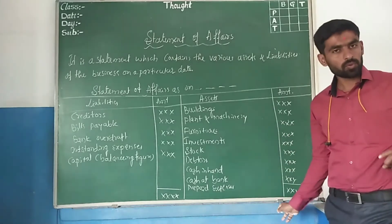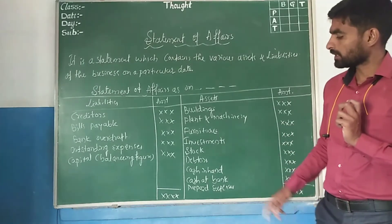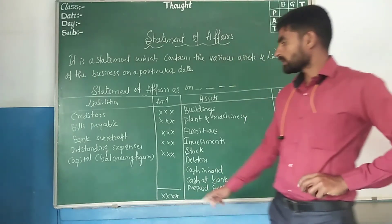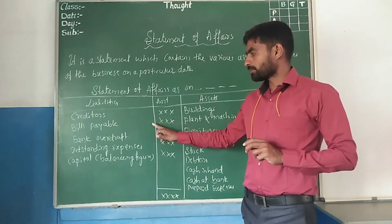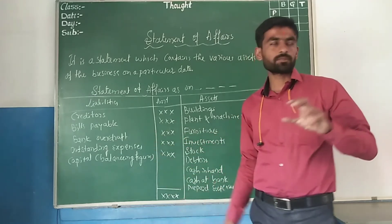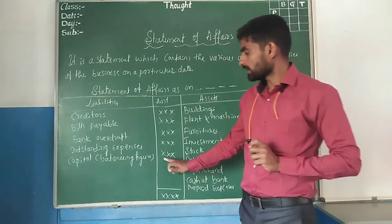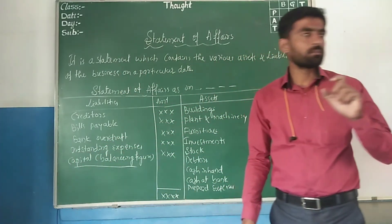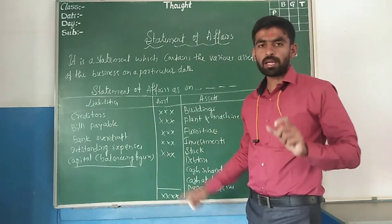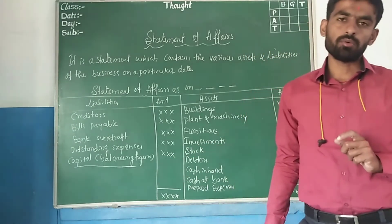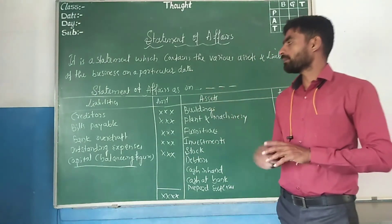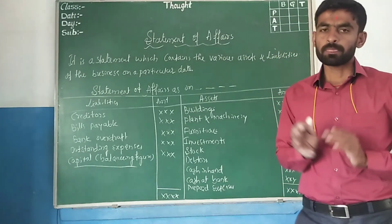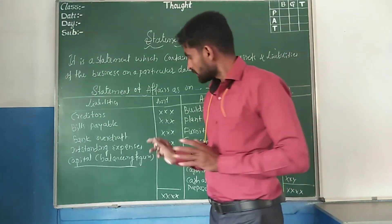The total of the asset side equals the total of the liability side. From the asset total we are able to pay creditors, bills payable, bank overdraft, and outstanding expenses. Whatever remains is the capital. This is how we find out the capital from the Statement of Affairs.